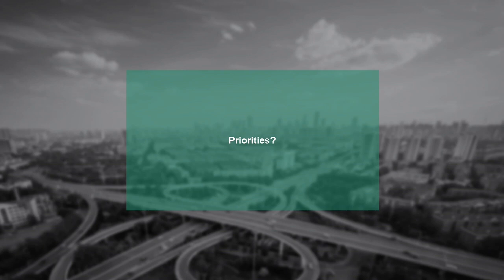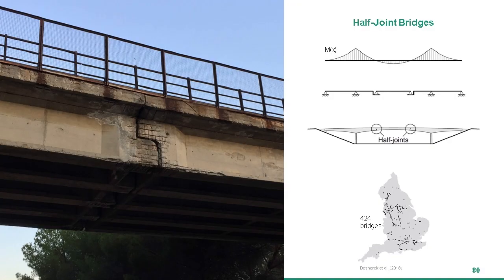Infrastructure management is a large-scale problem. To address it effectively, we need to identify priorities. One critical and recurring component is the half joint — essentially an internal hinge that simplifies design and construction, and has been used extensively for its advantages. On the other hand, it reduces the redundancy of a bridge: as water and de-icing salt leak through the joint, they promote corrosion and cracking, making it the weak link in the bridge.